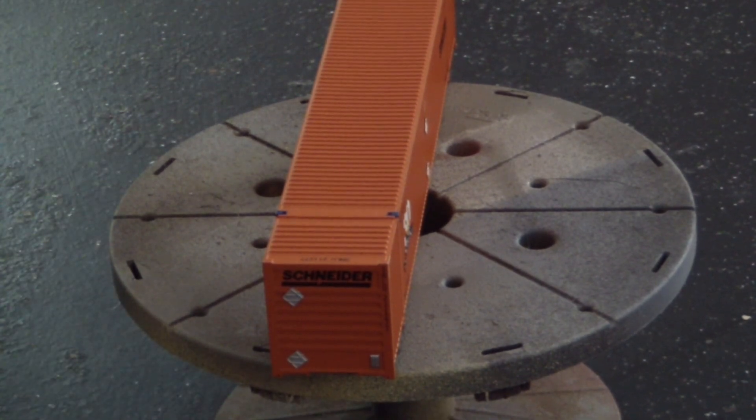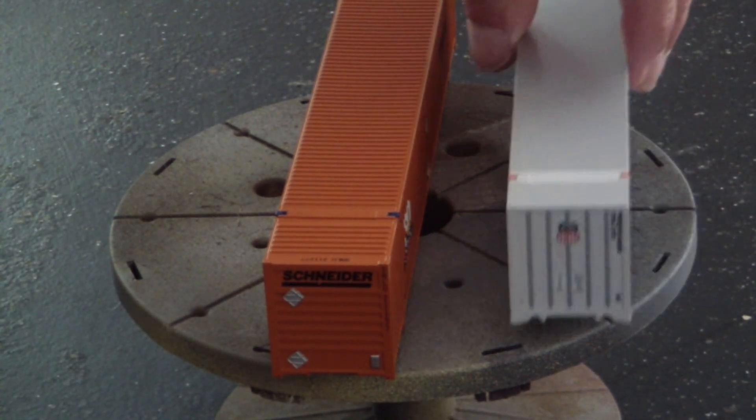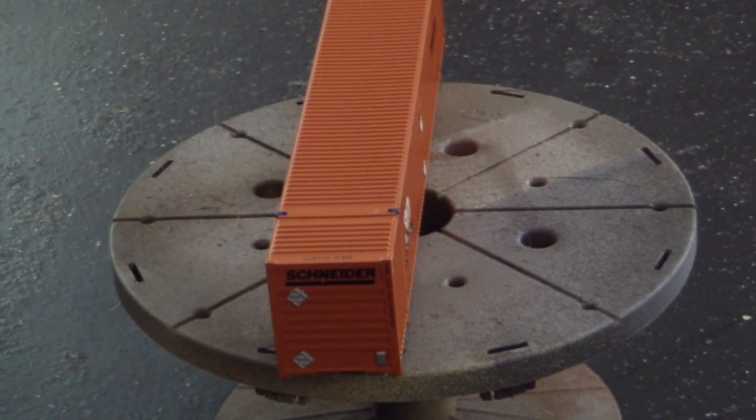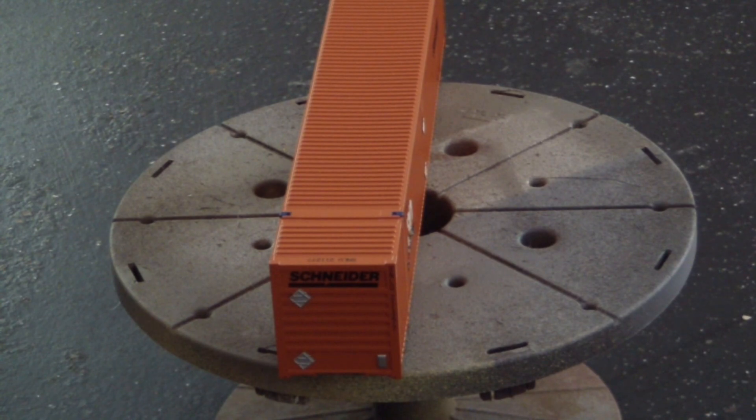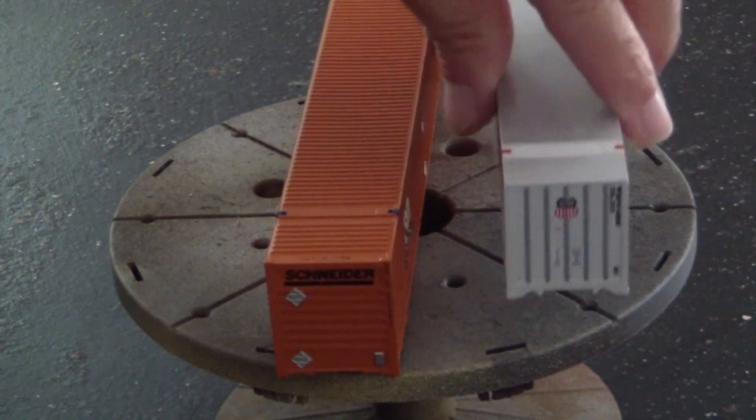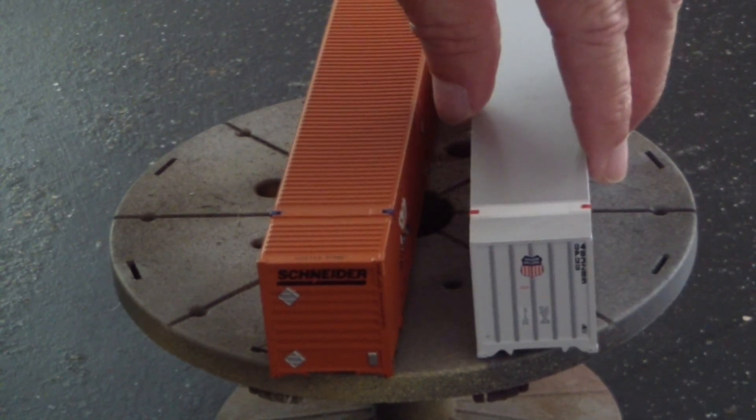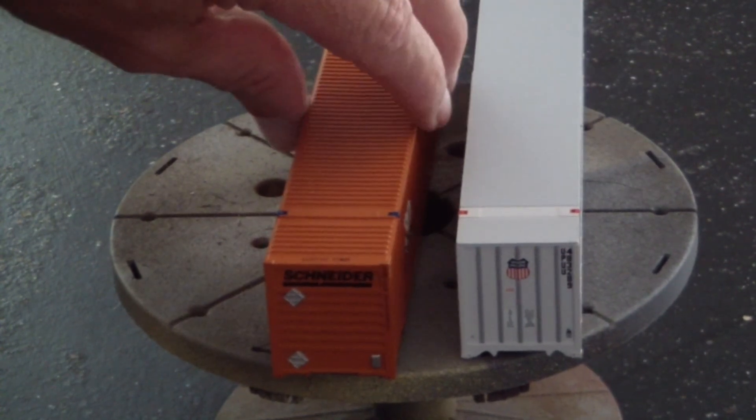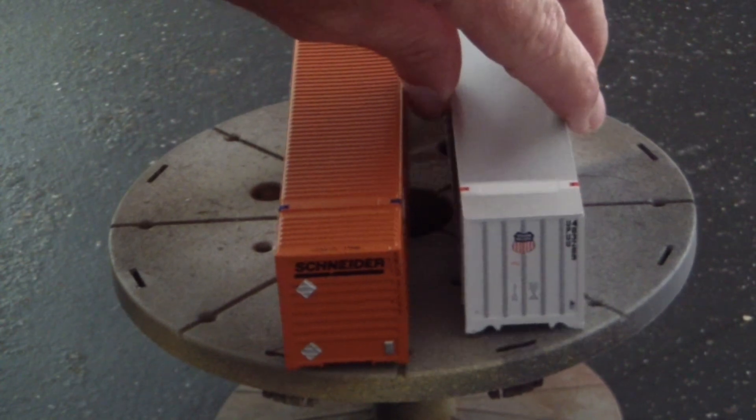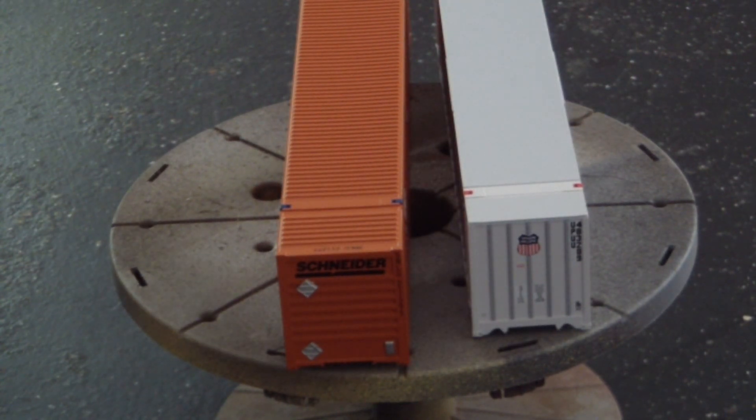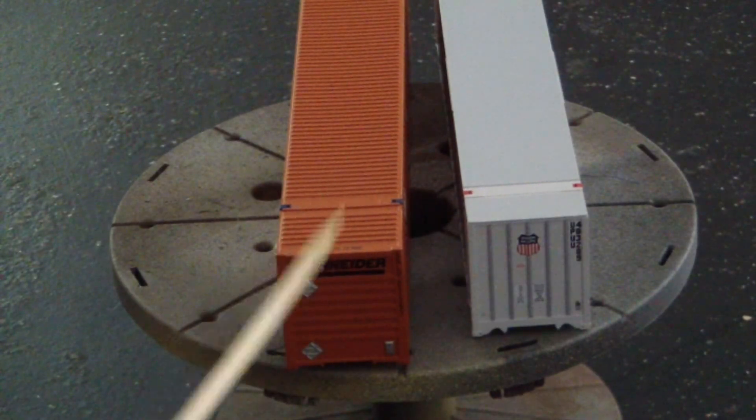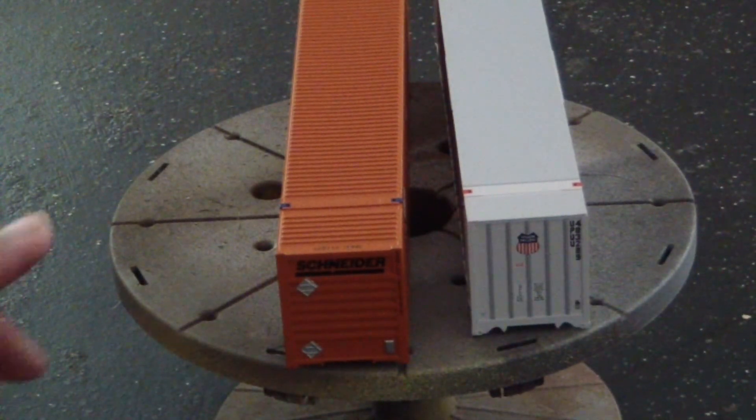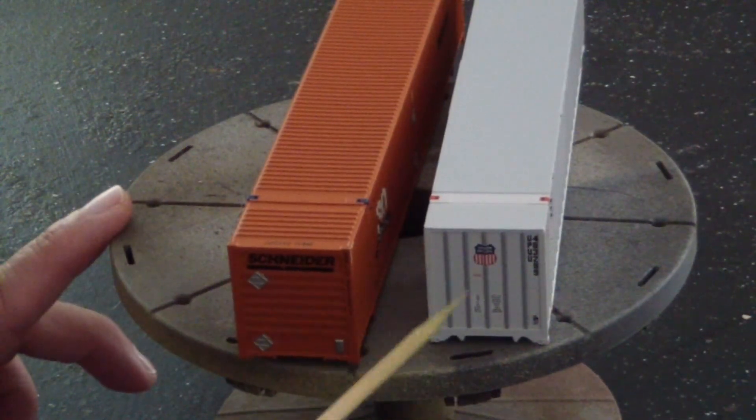This one here, this next one I'm putting down, this white one, is Class One Model Works. Let me put them the same way. The white one is Class One and the orange/tan one is Scale Trains.